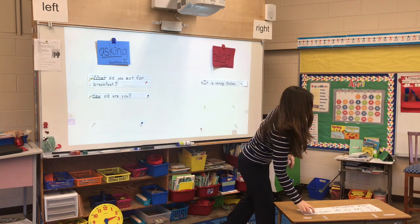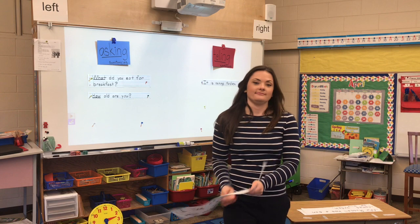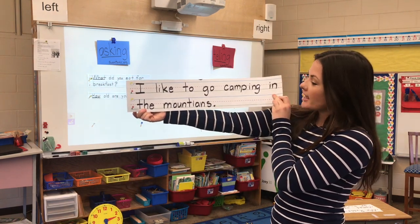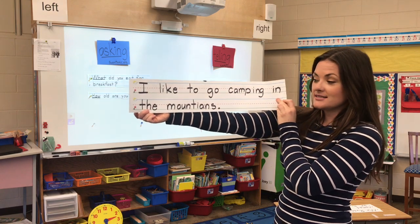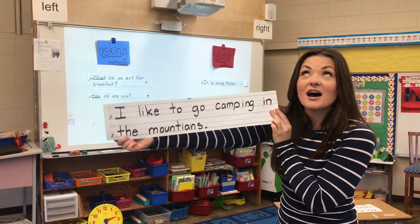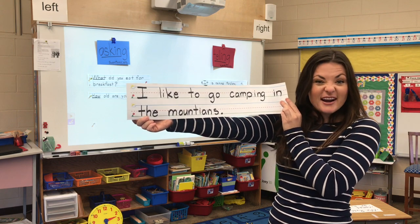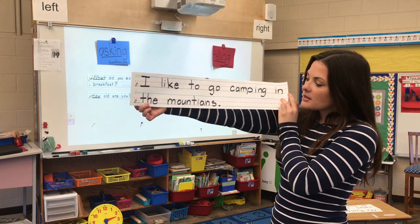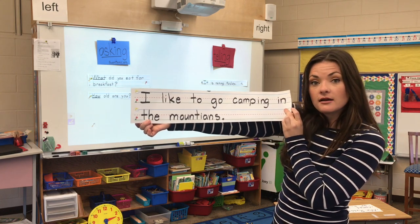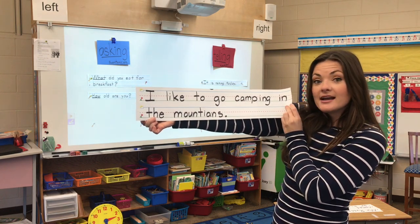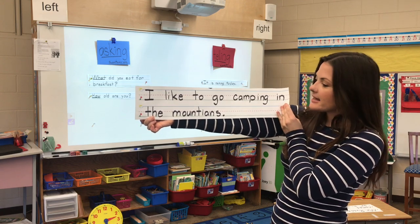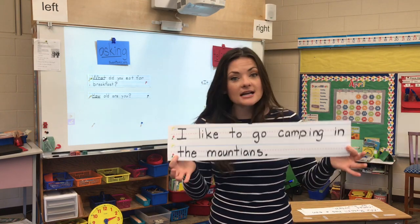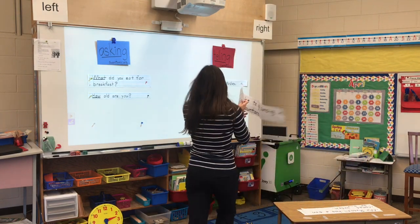Ms. Sam likes this sentence. It says, 'I like to go camping in the mountains.' That's true — Ms. Sam loves to go camping in the mountains. She can't wait until we can get back outside doing that again. This is telling you something about me. It starts with a capital and ends with a period. So this is a telling sentence — 'I like to go camping in the mountains.' It's going to go on our telling side.